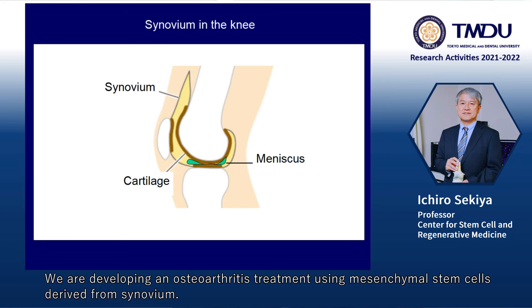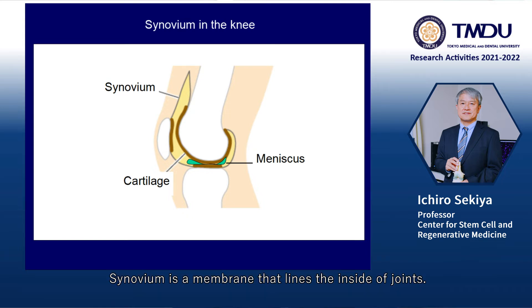We are developing an osteoarthritis treatment using mesenchymal stem cells derived from synovium. Synovium is a membrane that lines the inside of joints, and it has a high regenerative potential.